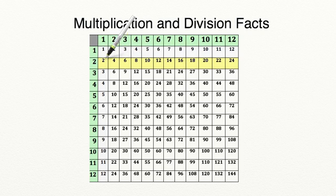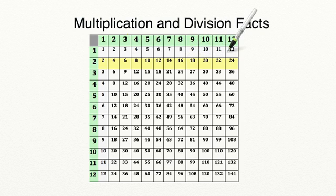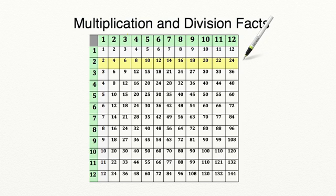Let's count the highlighted row together: 2, 4, 6, 8, 10, 12, 14, 16, 18, 20, 22, 24. So we were just skip counting by 2's, and that makes sense because we are multiplying by the number 2.